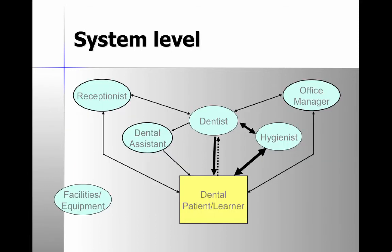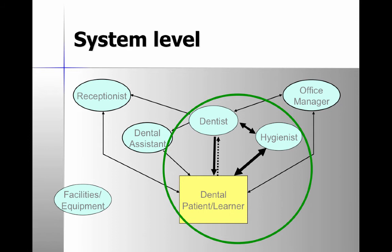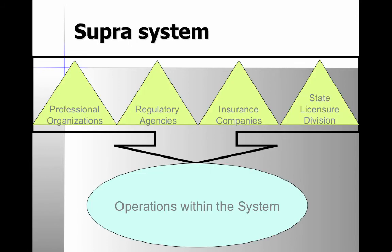At the system level, you can see the various components, with the most important being the dentist and hygienist. Interestingly, the dental patient has a lot less communication with the dentist than with the hygienist in this particular office. At the super system level, we have professional organizations, regulatory agencies, insurance companies, and a state licensure division — all important to the operations of the dental office system.